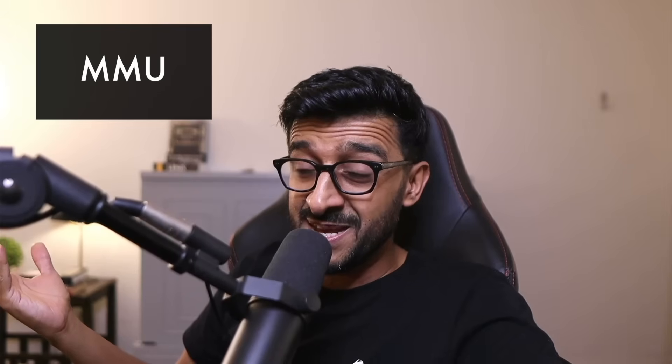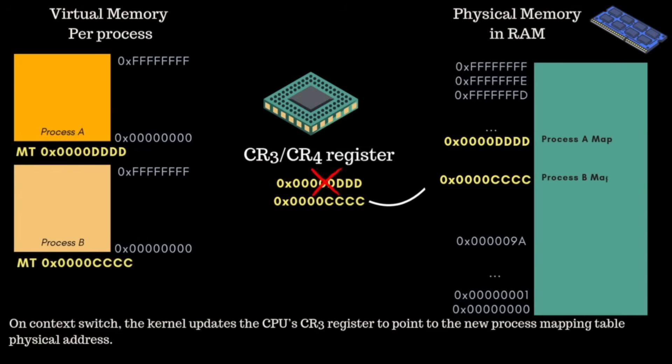Each process has its own virtual-to-physical mapping, which means every process needs its own mapping table — you can imagine how expensive this gets. When you context-switch processes, that CR3 register is updated to point to the mapping table of the new process, so the CPU knows which memory structure to walk for the translation. This mapping is done using page tables.